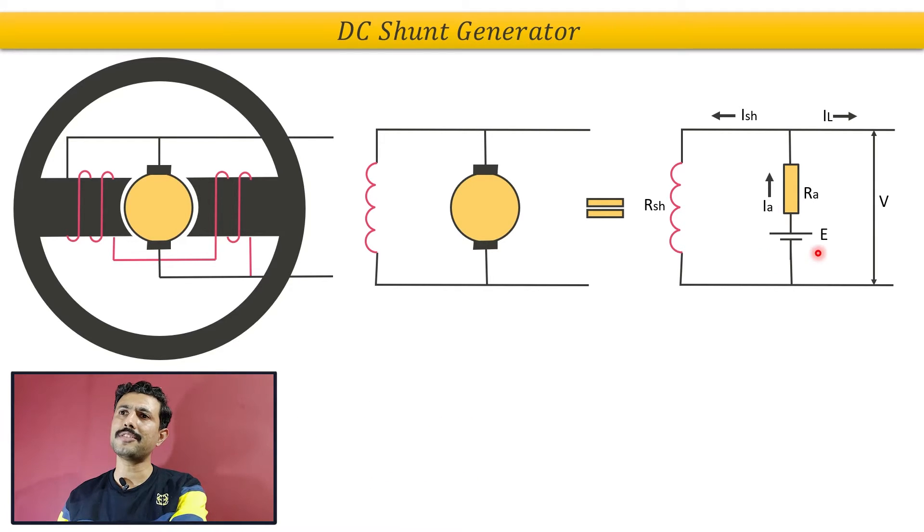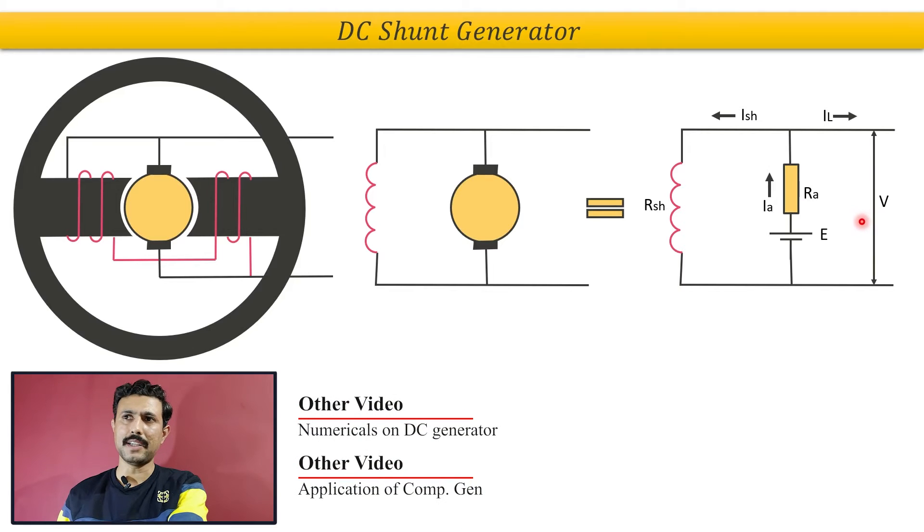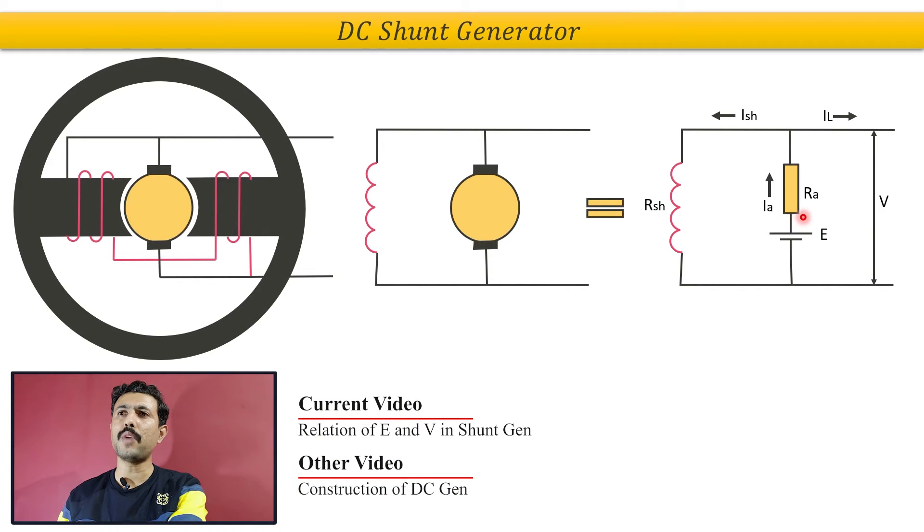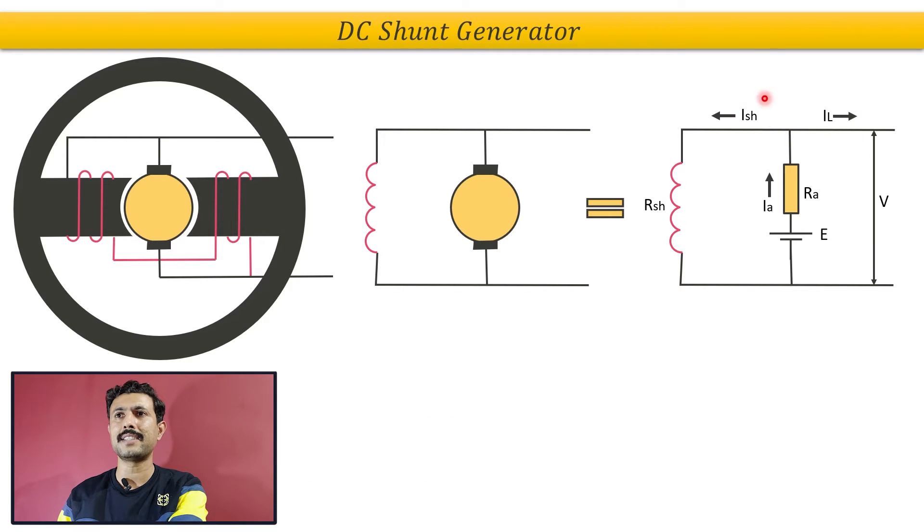Now our aim is to establish the relation between induced EMF E and terminal voltage V. It is very simple to establish. We will just apply KVL over here. But to get this quantity, we need to identify and calculate various quantities like load current, shunt field current, and armature current.